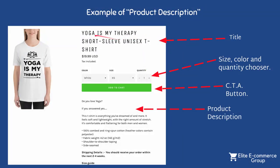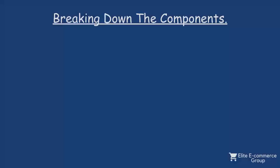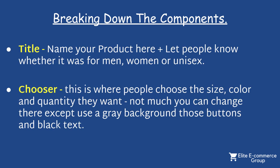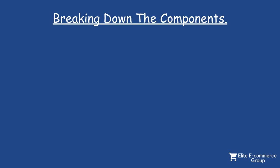Breaking down the components: number one, the title. Take a screenshot of this so you can actually implement this guide. The title is basically just the name of your product. If you want to give your yoga t-shirt a name you can put it in there, and especially for t-shirts let people know whether it's unisex or men's or women's. For other products like accessories, add that detail if necessary; if it isn't necessary you don't need to.